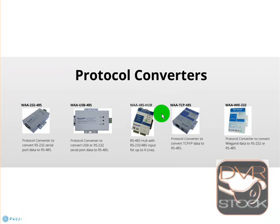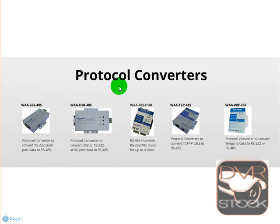Here we have our protocol converters: RS-232 to RS-485 converter, USB to RS-485 converter — since modern computers have fewer or no serial ports — and the RS-485 hub which extends four extra lines for RS-485 connections up to 4,800 meters of wire distance. We also have the RS-485 to TCP/IP converter, allowing up to 127 panels on one IP address. Finally, a Wiegand to RS-232 converter lets you use a wall reader as a desktop reader.